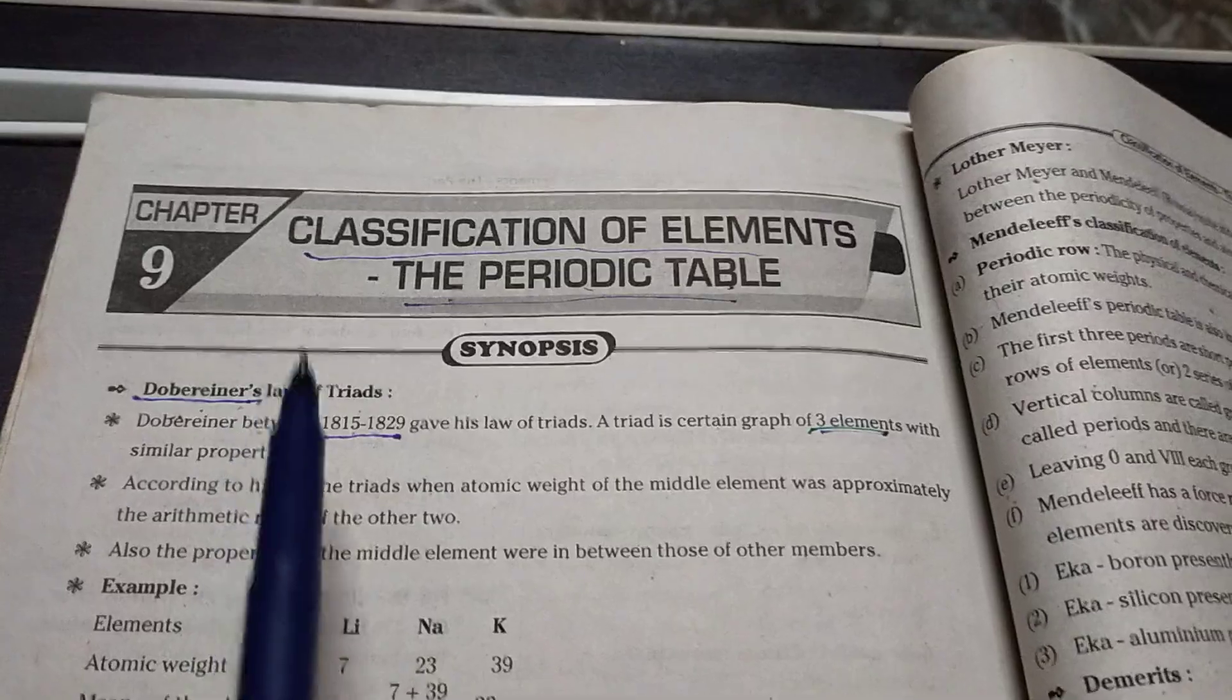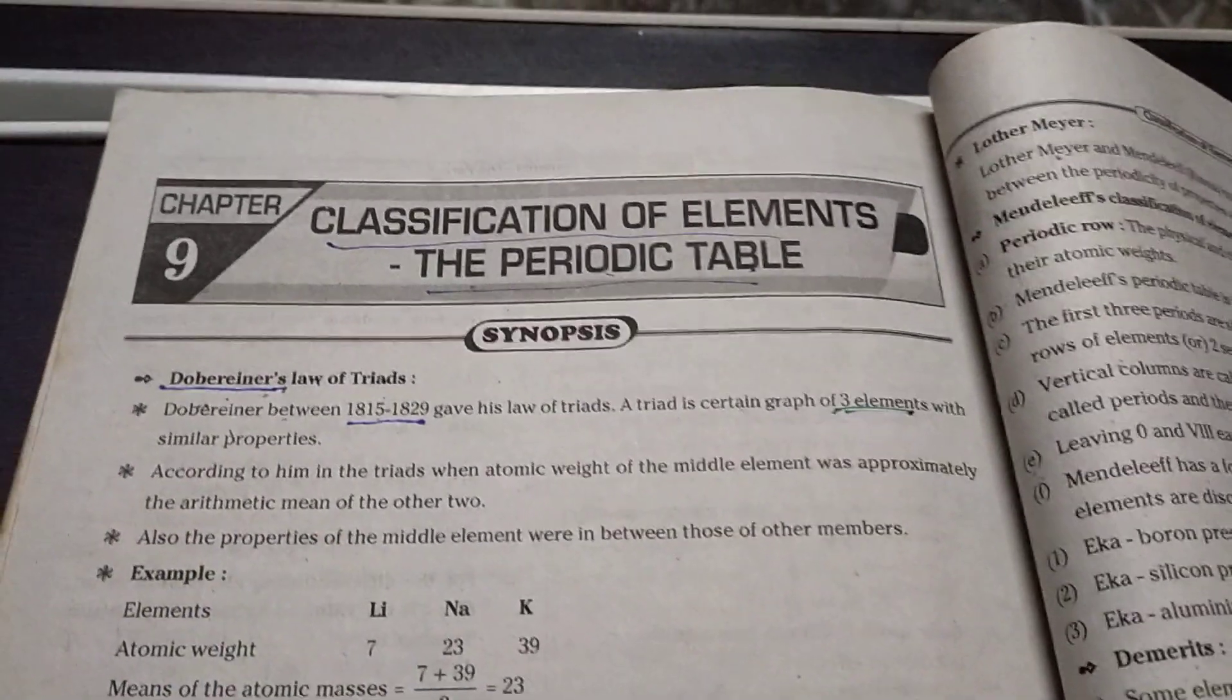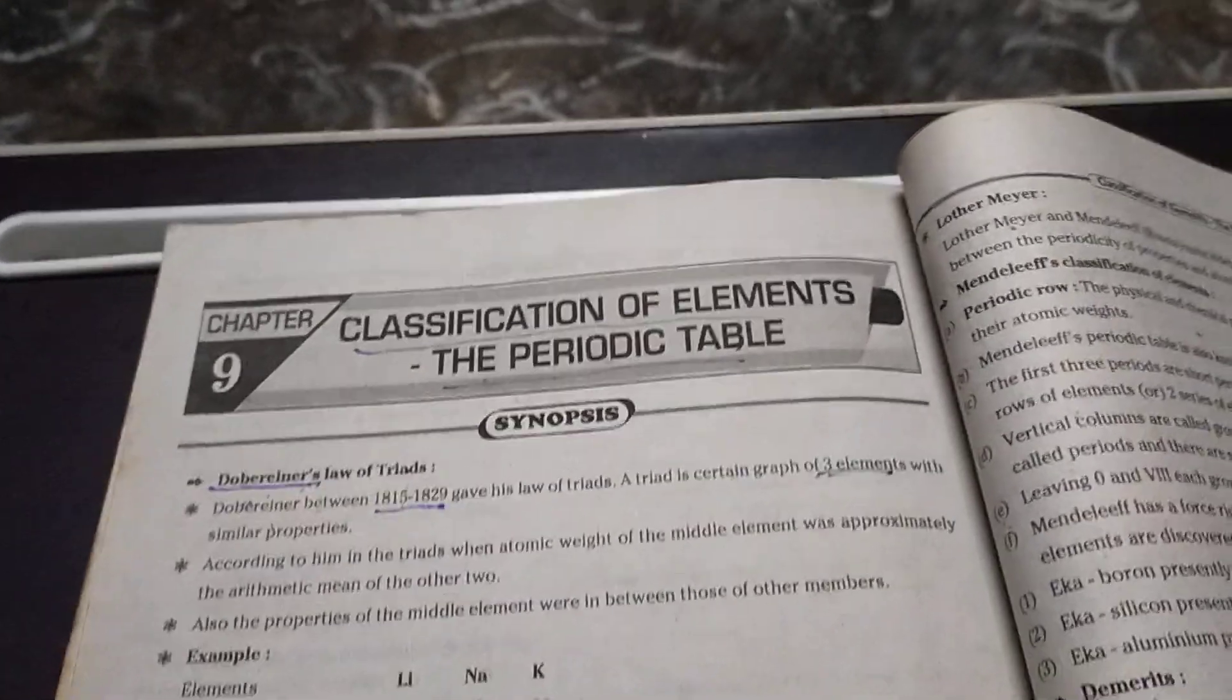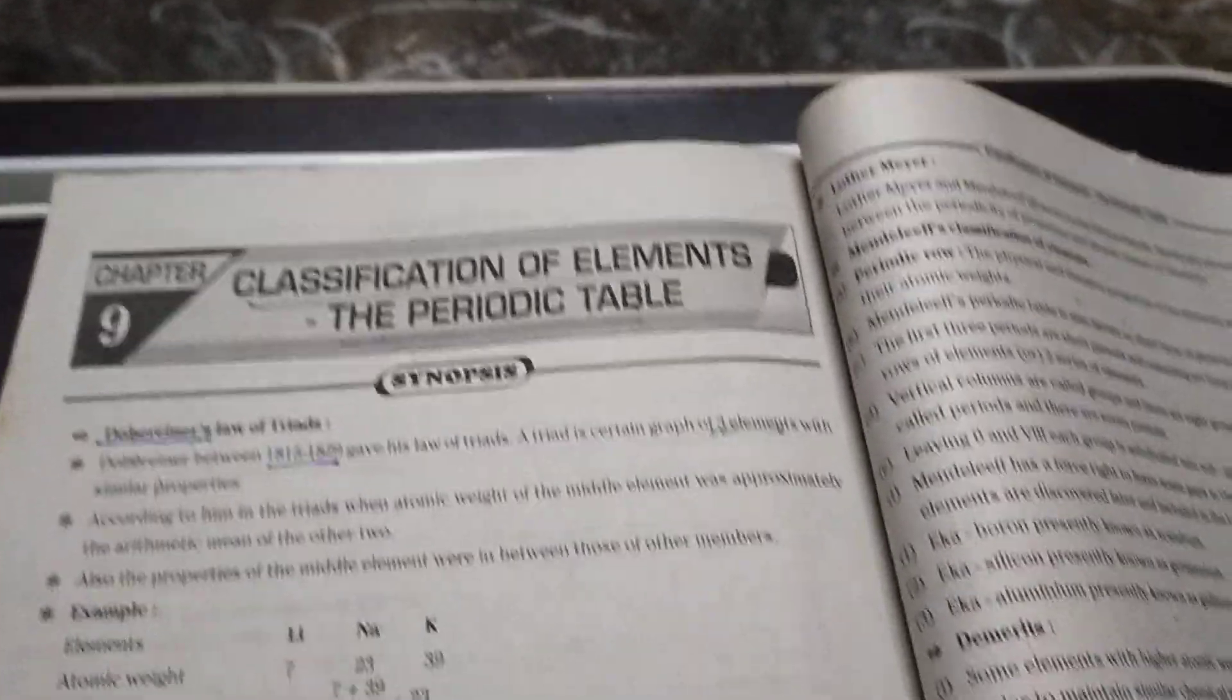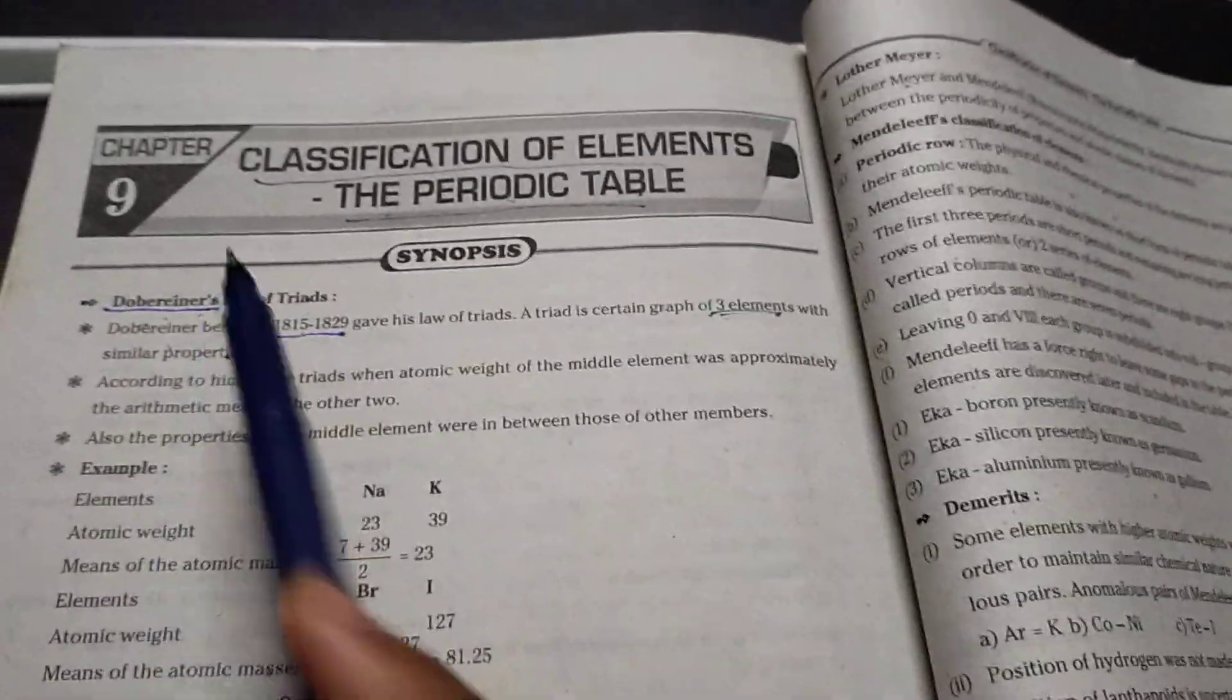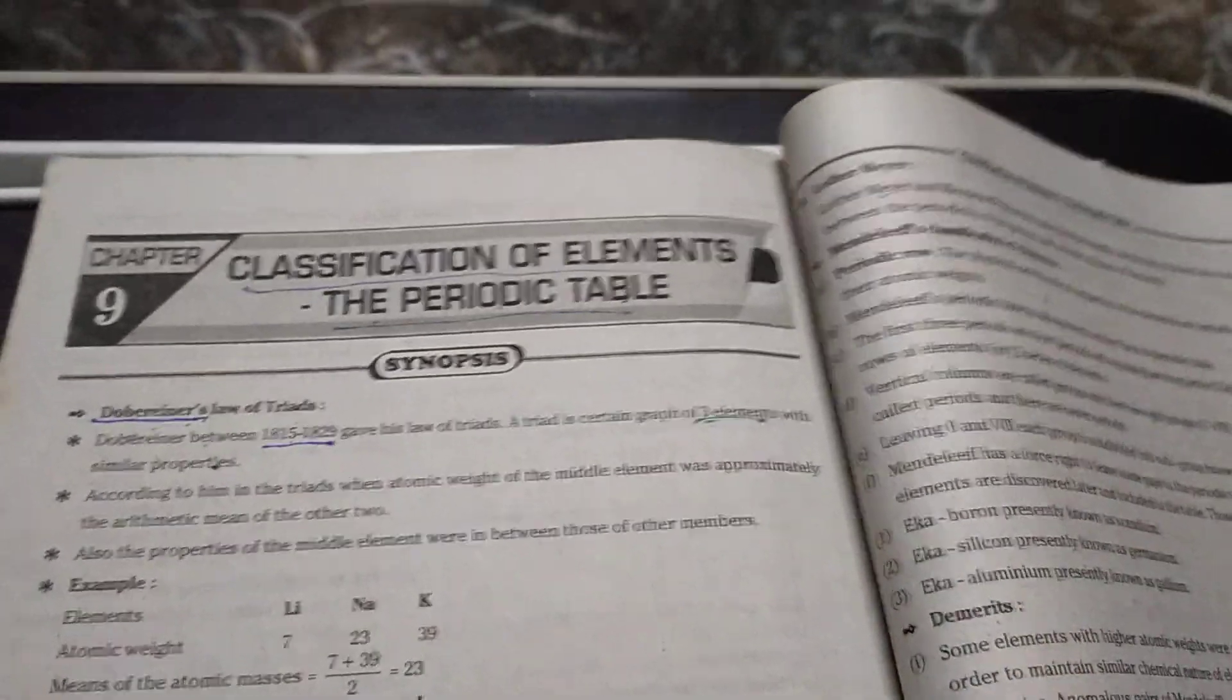Dobereiner between 1815 to 1829 gave his law of triads. A triad is a certain group of three elements with similar properties. Can you give some examples?